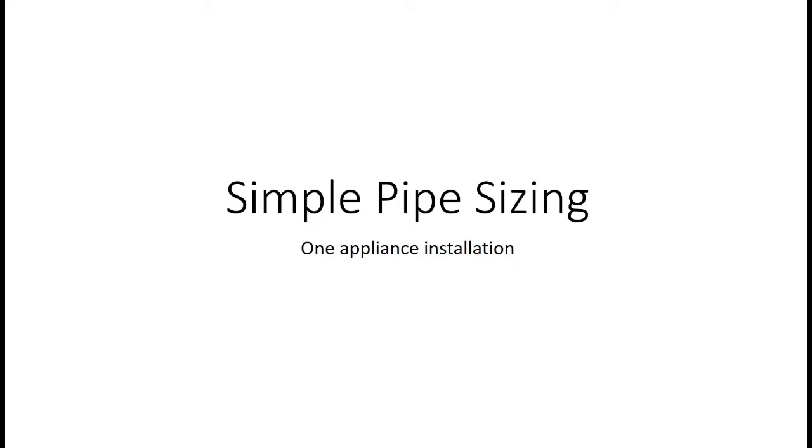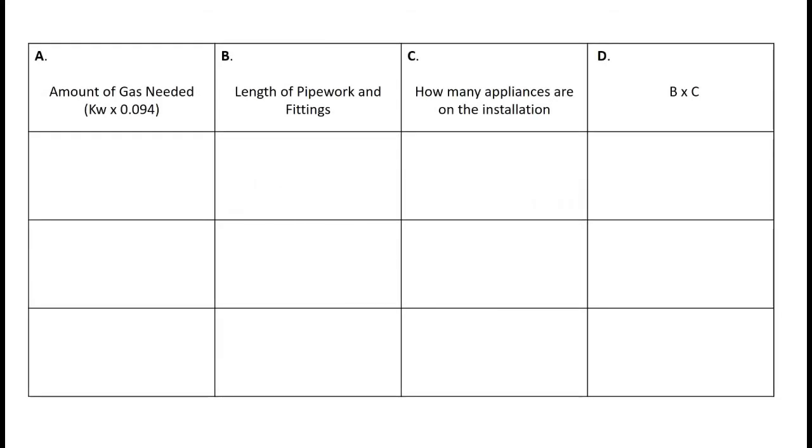The first thing I do is draw a box with four columns and three rows. At the top I put the amount of gas needed in box A, length of pipework and fittings in box B, how many appliances are on the installation in box C, and for box D we're going to multiply the number B by C.